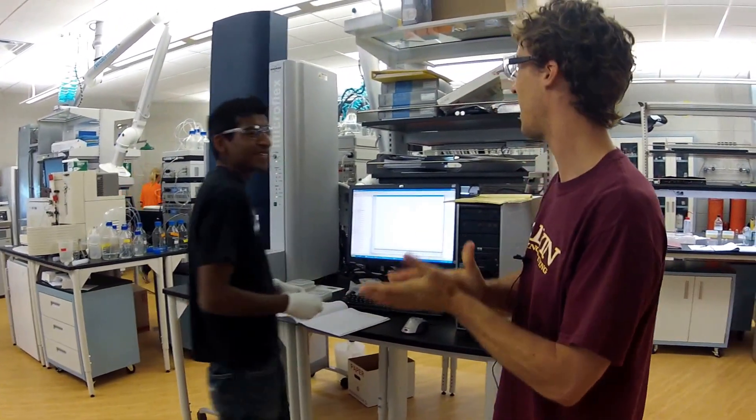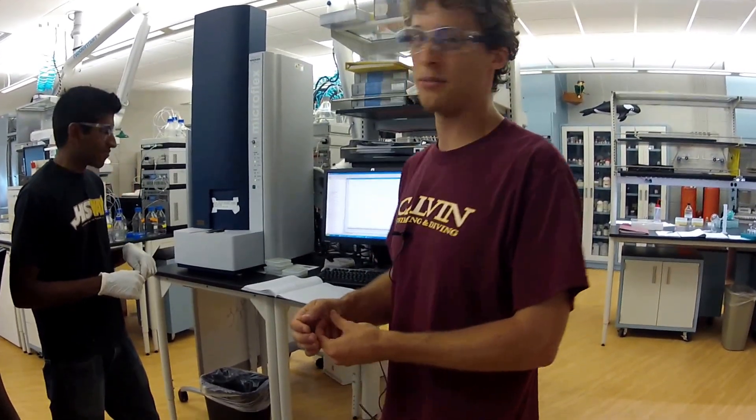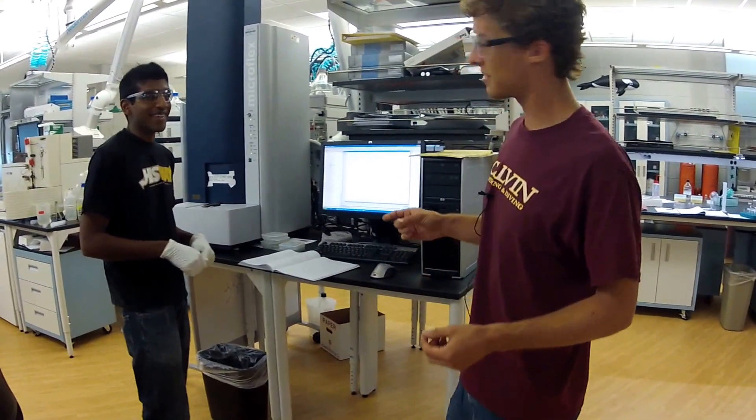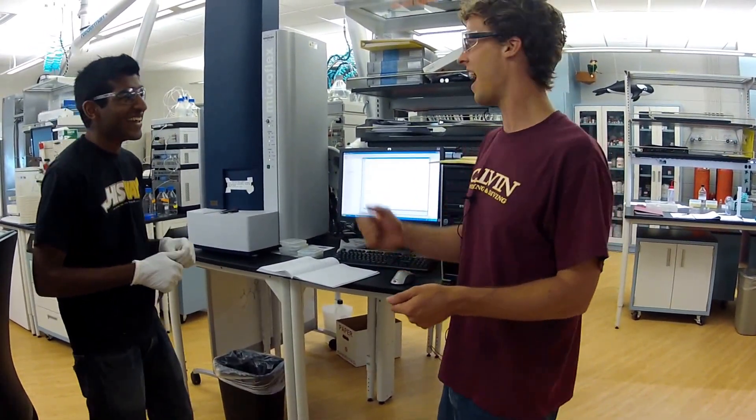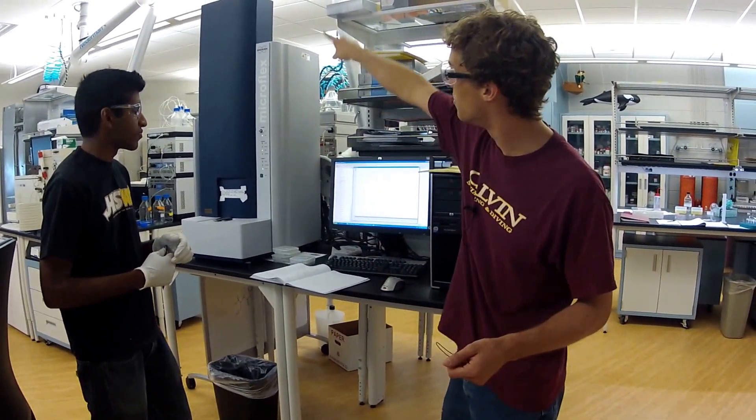So what the MALDI does is basically it's an extremely sensitive scale for things that weigh on the order of 10 to the minus 26 kilograms—so really, really tiny stuff. Basically we put stuff on a plate and zap it with a big UV laser, and then it flies through that tube there. Light things fly faster than heavy things, so then we can tell how much they weigh.